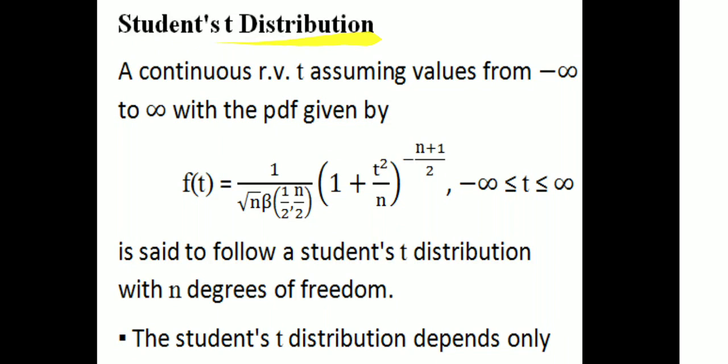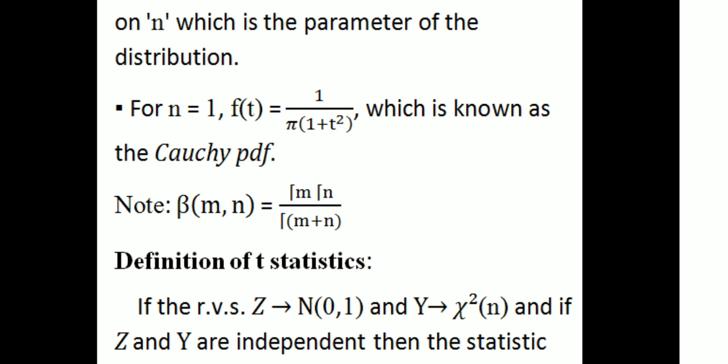Our next topic is the student t-distribution. A continuous random variable t assuming values from minus infinity to infinity with the probability density function f(t) = 1/(√n · β(1/2, n/2)) · (1 + t²/n)^(-(n+1)/2), where -∞ ≤ t ≤ ∞, is said to follow a student t-distribution with n degrees of freedom. The student t-distribution depends only on n, which is the parameter of the distribution.